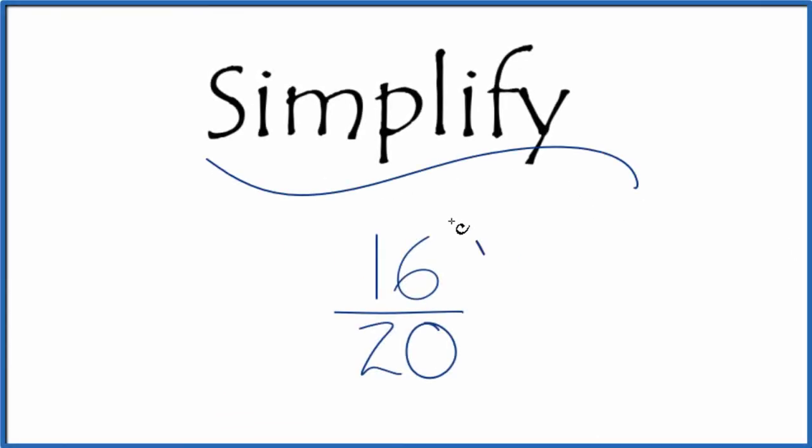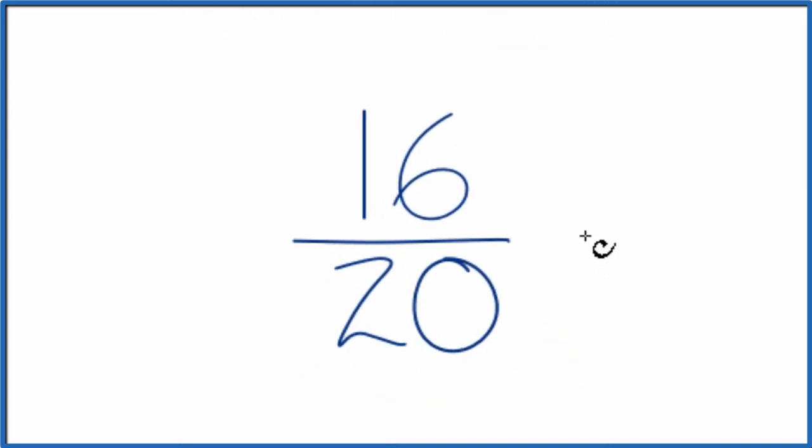Let's simplify the fraction 16 over 20. Here's what we'll do: we want to find another fraction that's equal to 16 over 20 but it's in the lowest terms. So to do that, we need to find a common factor.